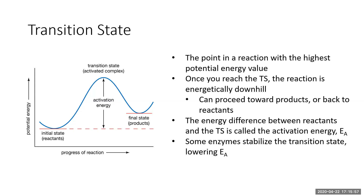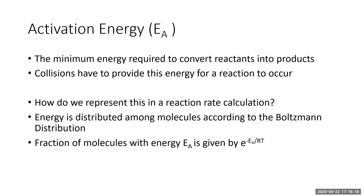The energy of activation represents the energy difference between reactants and the transition state. Enzymes often stabilize the transition state and lower the energy of activation, which is why they can speed up the rate of reactions. The activation energy is the minimum energy required to convert reactants into products, and collisions have to provide this energy.